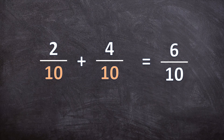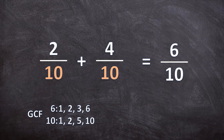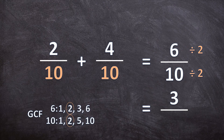Remember, you cannot stop here — we always need to simplify our answers, whether you're adding, subtracting, multiplying, or dividing, and the question doesn't have to tell you to simplify it. To simplify 6 over 10, find the greatest common factor of 6 and 10. The factors of 6 are 1, 2, 3, and 6; the factors of 10 are 1, 2, 5, and 10. The greatest common factor is 2, so divide both by 2: 6 divided by 2 is 3, and 10 divided by 2 is 5. Our final answer is 3 over 5.